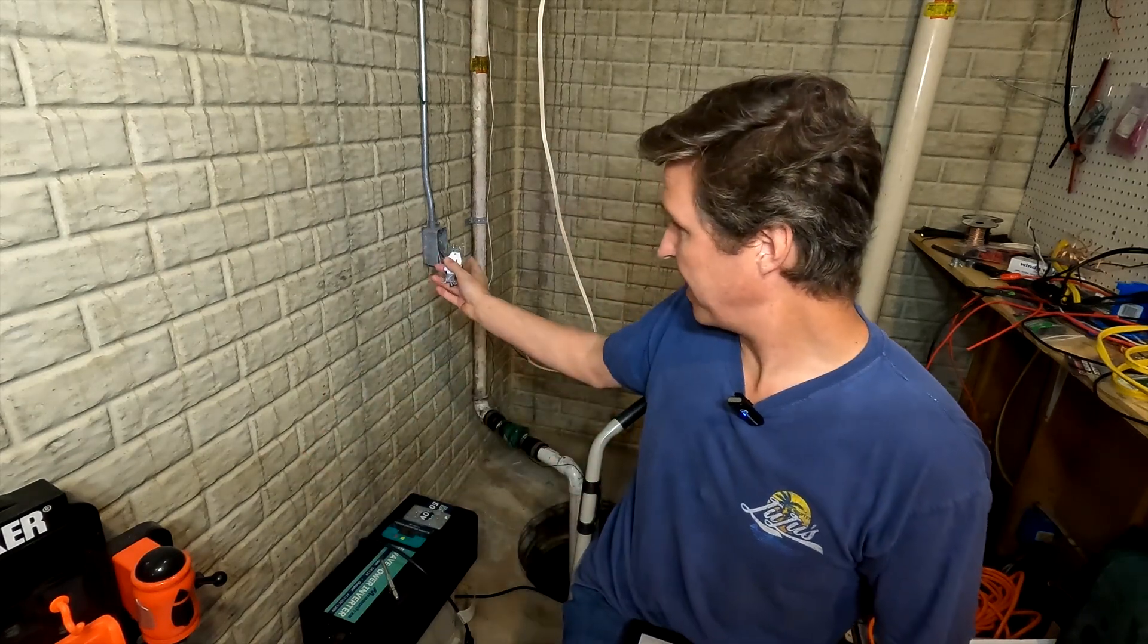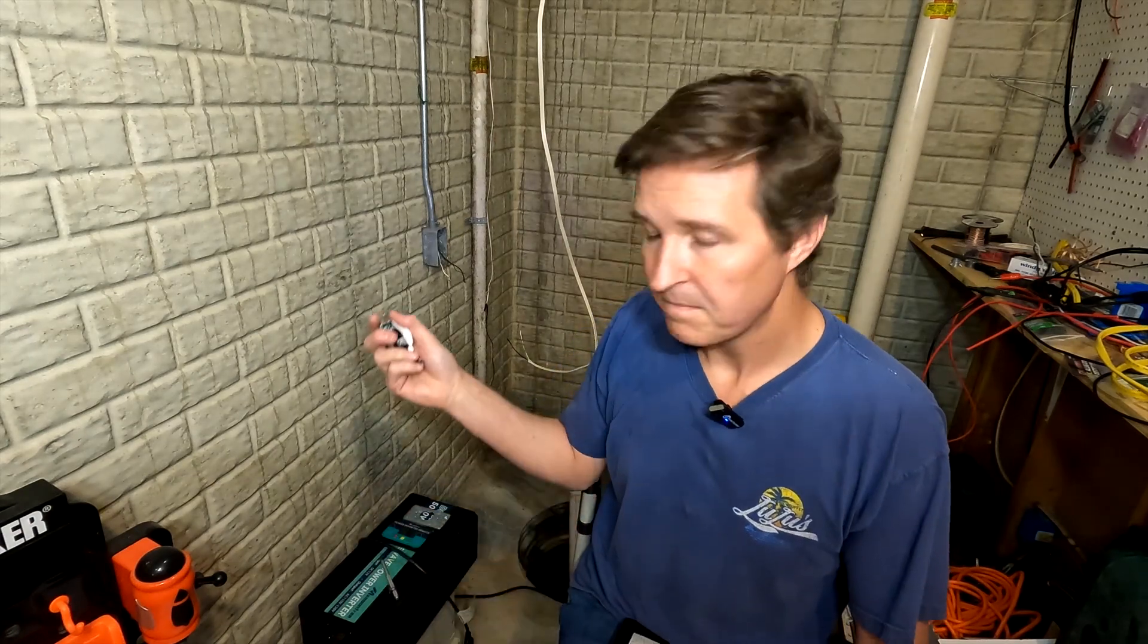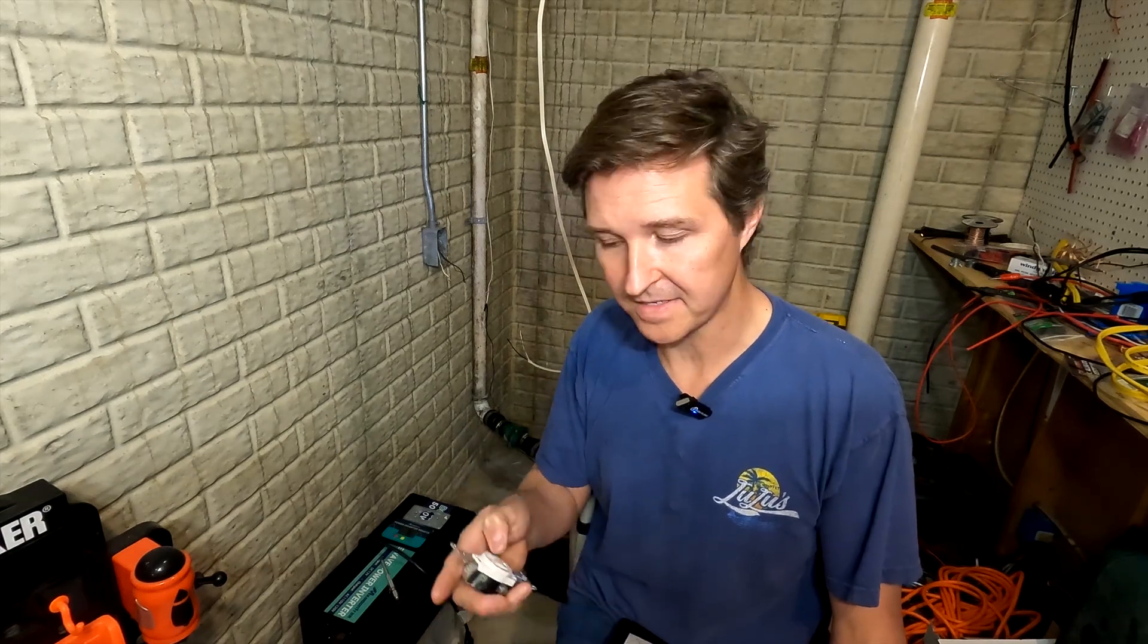Everything is going to be going into here and coming out of here. I took the outlet out of the box, and my house lines are right there. All I have to do is pull that out and wire it into the box, then from my off-grid system into this box, and then from this box it's going to go back to this plug.